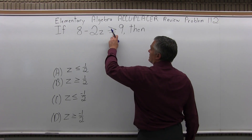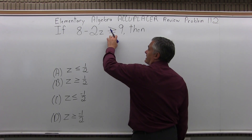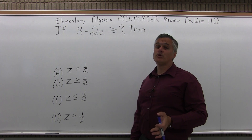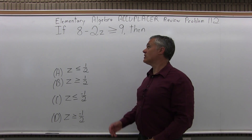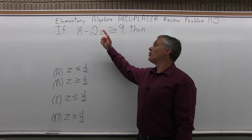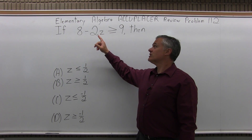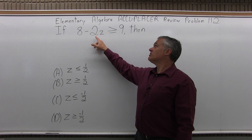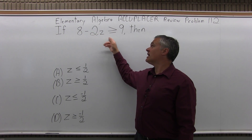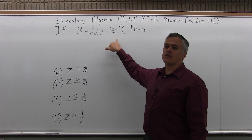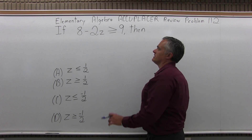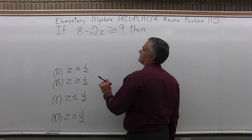An inequality symbol is just like an equal sign — you can do anything you want to both sides as long as you do the same thing, with one extra condition: if you multiply or divide both sides of the inequality by a negative value, you have to flip the direction the inequality symbol points in.